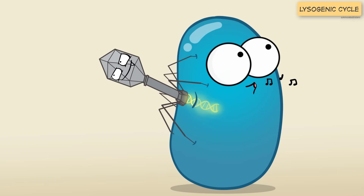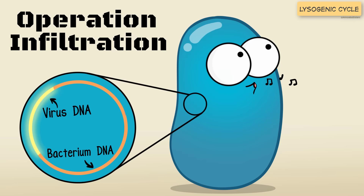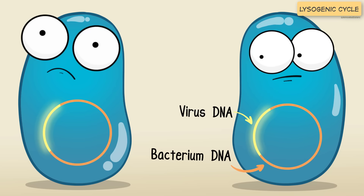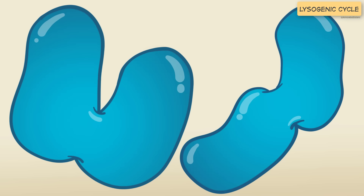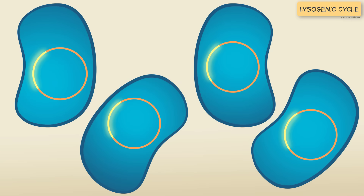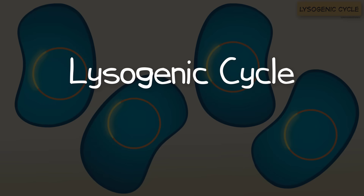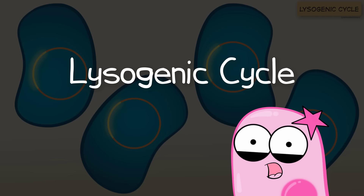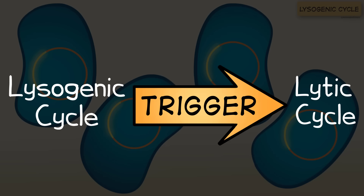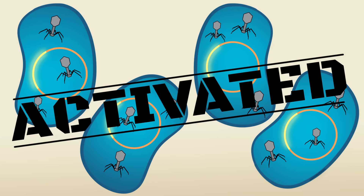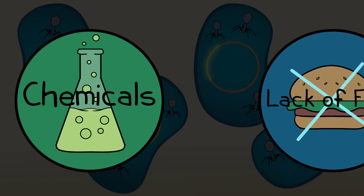Viruses that go through the lysogenic cycle tend to do the same thing at the beginning — they inject their genetic material — but this time the genetic material stays hidden in the host's genetic material. When the host makes new cells, it replicates its own genetic material and the viral genetic material. Those daughter cells make new cells and also replicate both, and so on. This may not seem like a problem, but it becomes one if the virus gets triggered to go into the lytic cycle, because then all those cells that have the viral genetic material can start assembling viruses. What triggers it can vary — it could be a chemical trigger or a lack of food for the host.